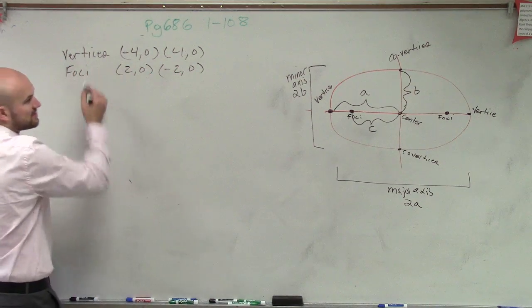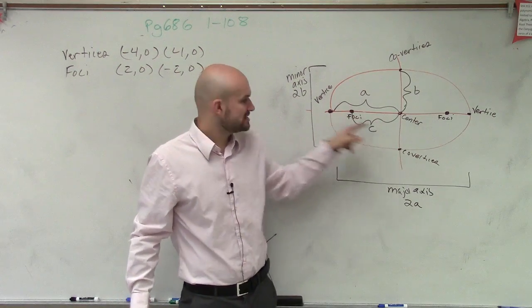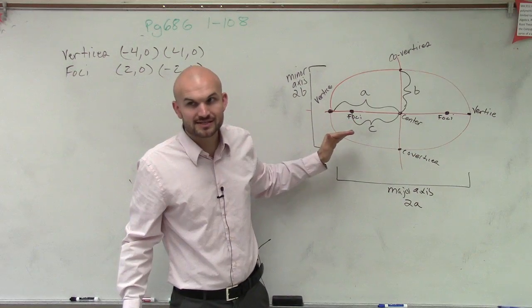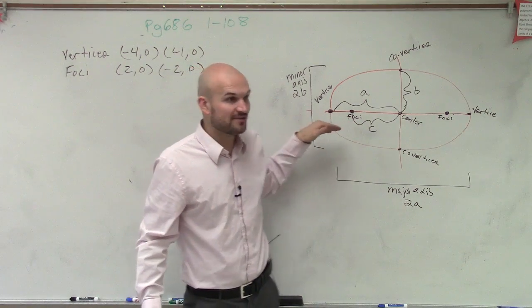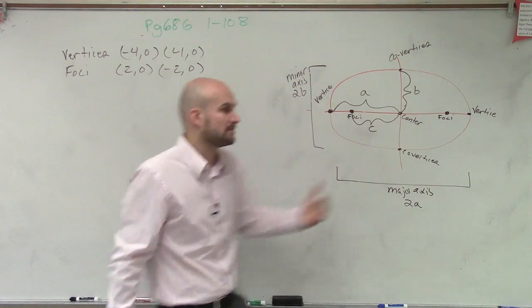So we have vertices and foci. Notice how the vertices and the foci all lie on the major axis. So if I can figure out that major axis to be horizontal or vertical, I can determine what type of formula I'm going to use.